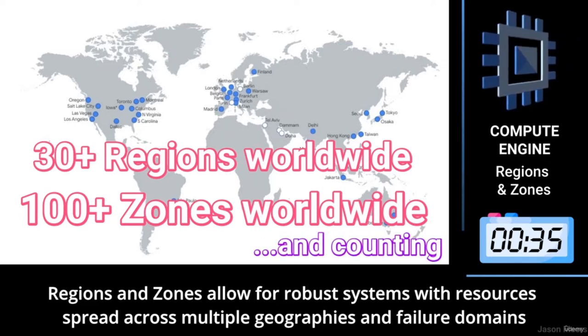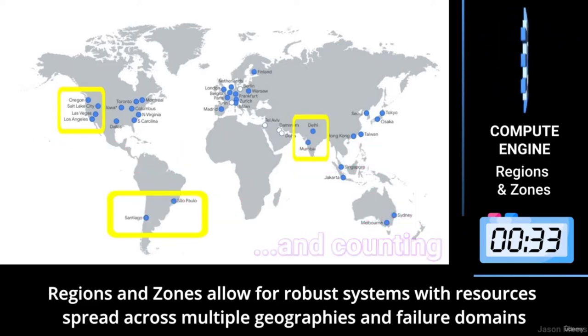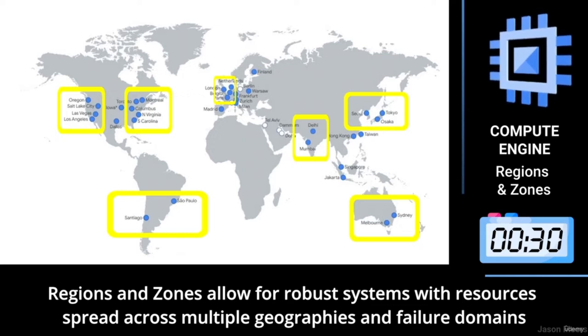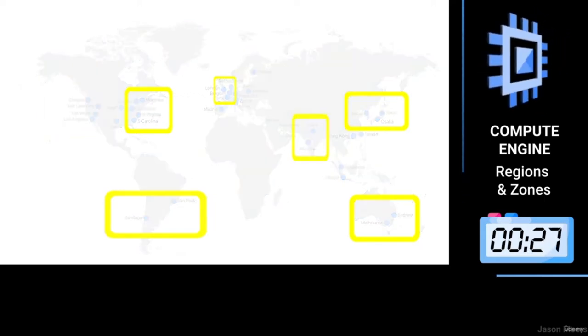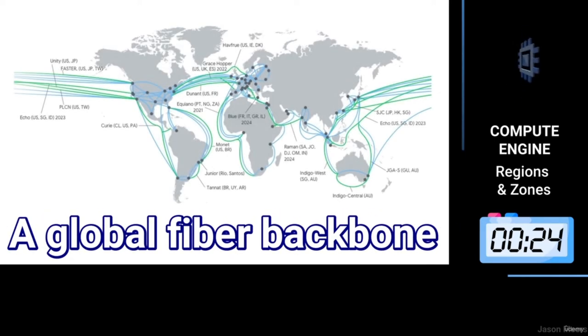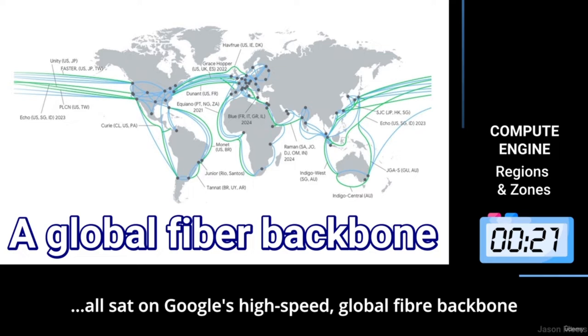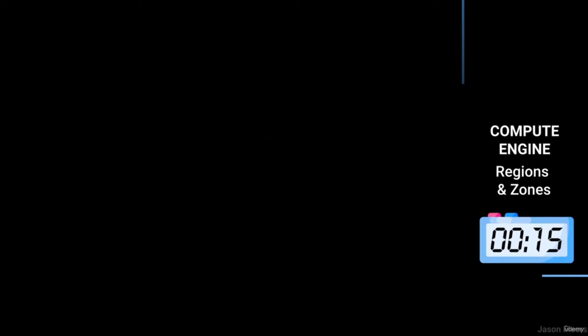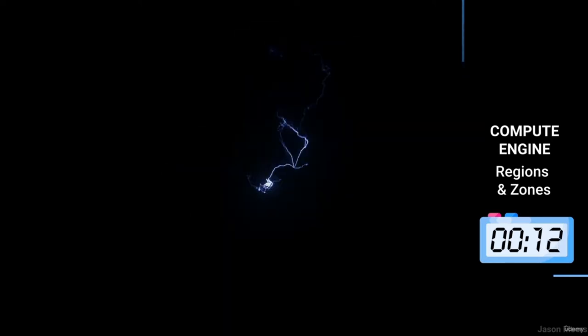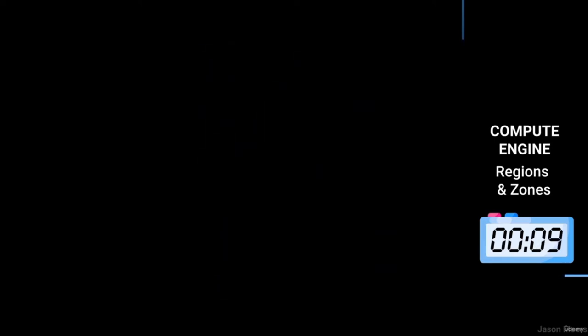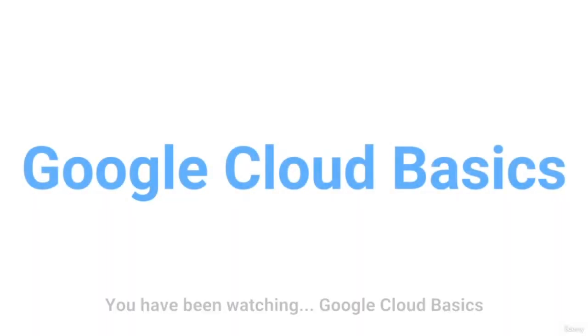To automatically manage multiple instances across multiple regions and zones, you can also set up a managed instance group. Using regions and zones allows you to design robust systems with resources spread across multiple geographies and failure domains, all sat on Google's high-speed global fibre backbone.